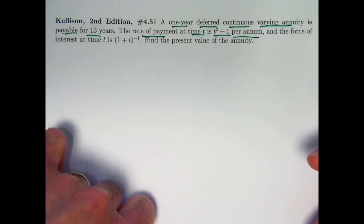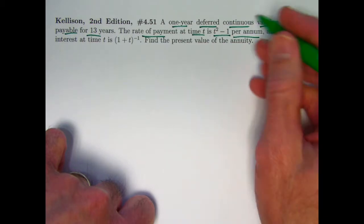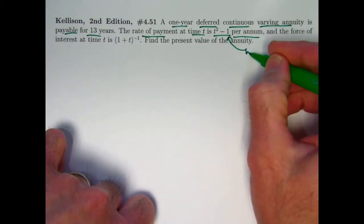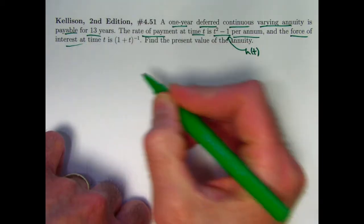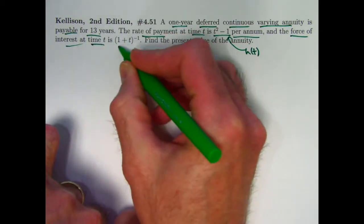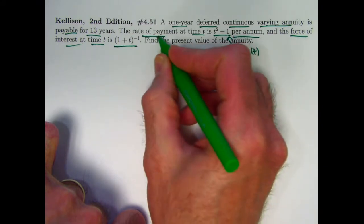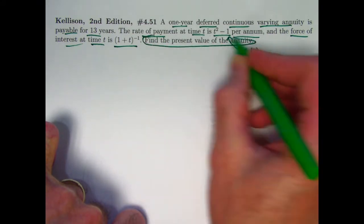The rate of payment at time t is t squared minus 1 per annum. This would really be in units of money per year then. This would be the function we've been calling h of t. And the force of interest is not constant this time. At time t its value is 1 plus t to the negative 1. The goal is to find the present value of the annuity.